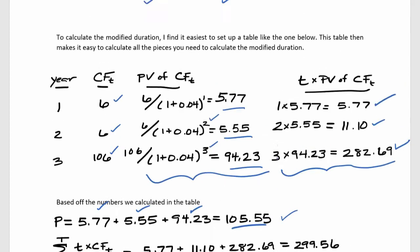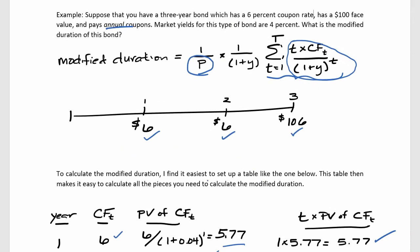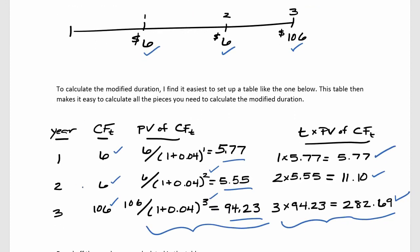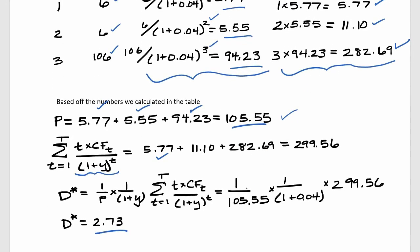To reiterate what I did in this example: I first drew out a timeline, then set up a table with columns for the year, the cash flow at each period, the present value of each cash flow, and that present value multiplied by how many periods out we receive it. Summing the present values gives the price, summing the t-times-PV column gives the numerator quantity, and plugging everything into the modified duration formula gives the modified duration of 2.73 — a measure of the bond's sensitivity and exposure to interest rate risk.